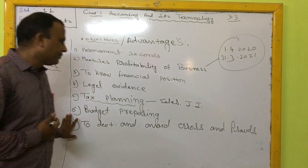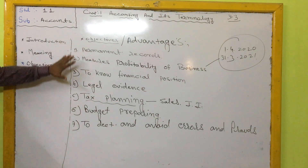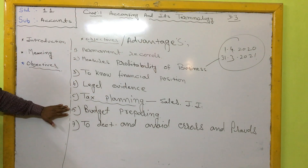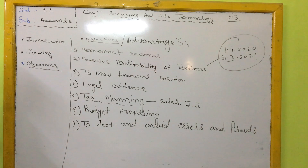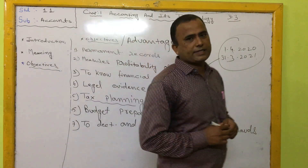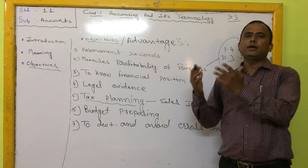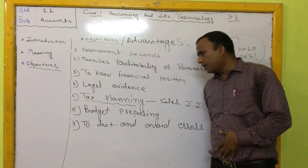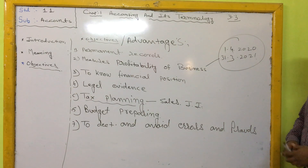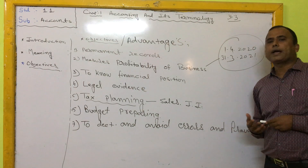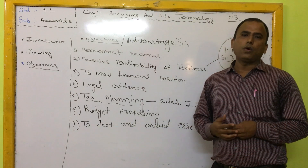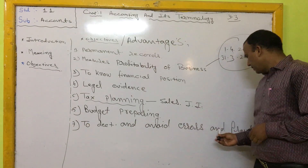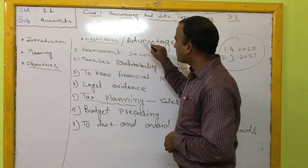The sixth objective is for preparing a budget. Accounting books are very useful for the owner to frame policies for the next year. If the owner wants to change the business policy, the accounting book helps in preparing the budget. The seventh objective is to detect and avoid errors and frauds. When accounting is prepared with the help of a computer or proper books, there are fewer chances of error and fraud.